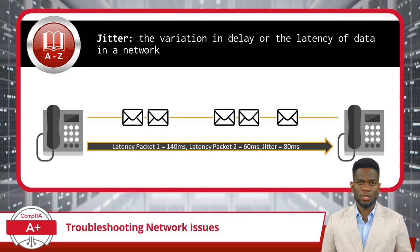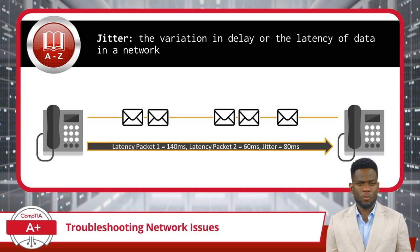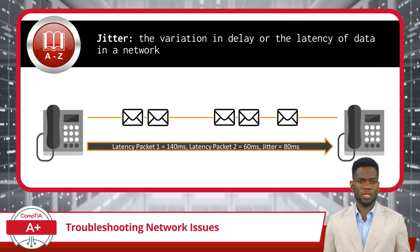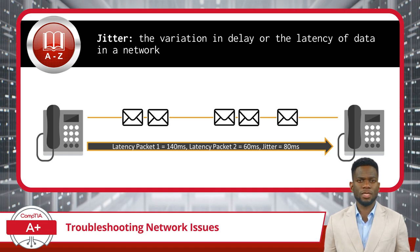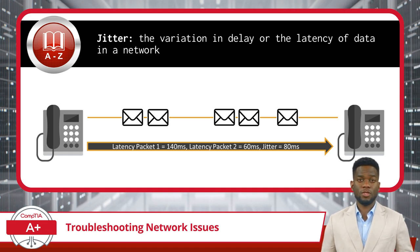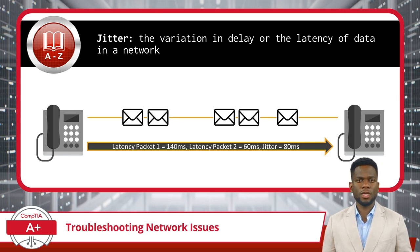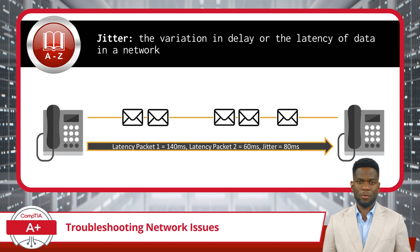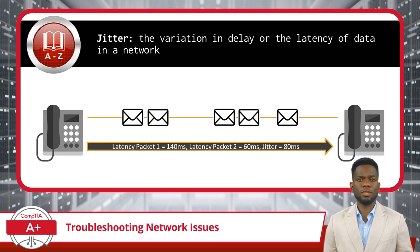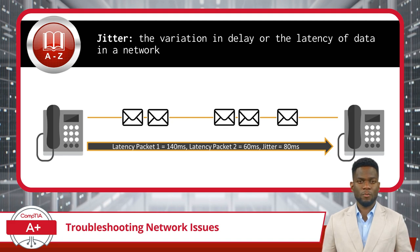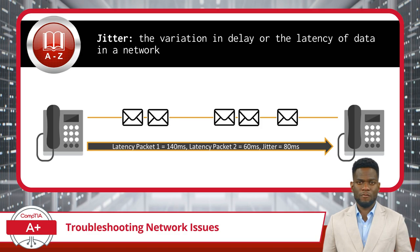Jitter, in simple terms, refers to the variation in delay, or the latency, of data in a network. Both latency and jitter are metrics that can be used to measure network performance. Unlike latency, which measures the overall time it takes for data to travel from one point to another, jitter focuses on the inconsistency or fluctuations in the arrival time of data packets. Stated another way, latency represents the average delay between sending a packet and receiving a response, while jitter indicates how much this delay varies over time.